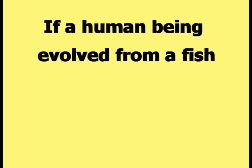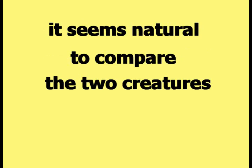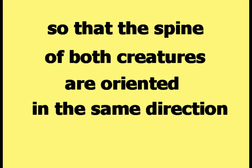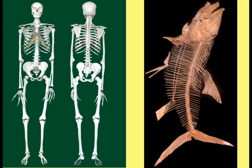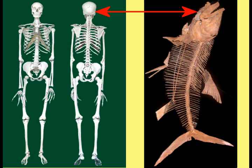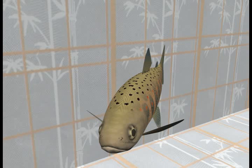If a human being evolved from a fish, it seems natural to compare the two creatures so that the spine of both creatures are oriented in the same direction. This picture shows the fish so that the fish spine is vertical, like the human spine. The head of the fish is also matched to the head of the human being when the spine of both creatures are oriented this way.